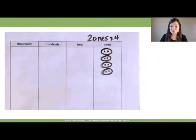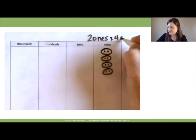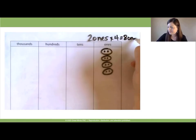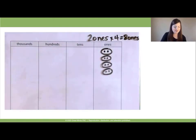So 2 ones times 4 is what? It's 8 ones. Okay, let's erase.